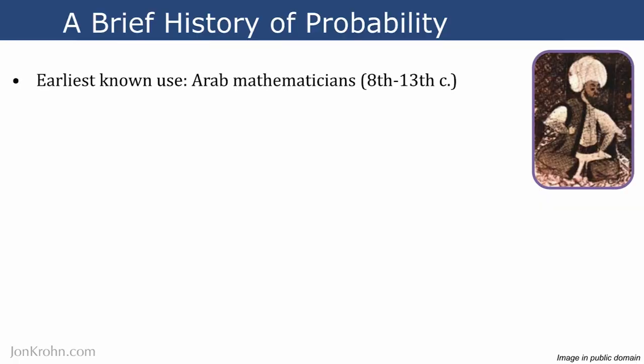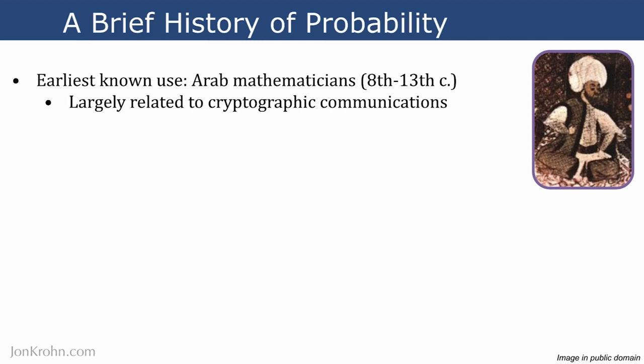The earliest known use of probability was by Arab mathematicians around the 8th to the 13th century of the Common Era. So probability is a relatively recent development — only about a millennium old — which contrasts starkly with calculus, which is several millennia old. That early usage was largely related to cryptographic communications. Probability was used to encode messages, which would be sealed up and taken by horseback to a recipient, who would then use a probability-based cryptographic key to decipher the message, keeping communications safe during their journey.